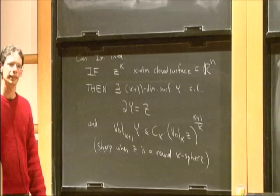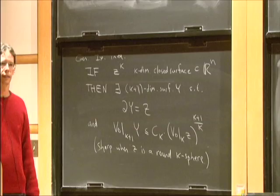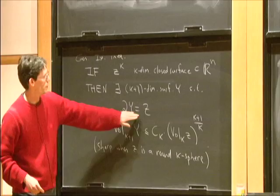Can I ask a question? Sure. Did there exist a surface Y? But what about other surfaces? Yeah. Right. So there exist lots of surfaces Y whose boundary is Z, and some of them obey this, but most of them don't.